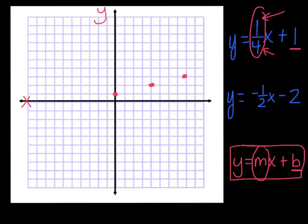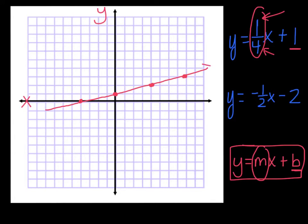Now if I want to get points going down, I just need to do the opposite — go down one, back four. I've got four points, so I'm going to connect it and draw arrows. There's my first line.